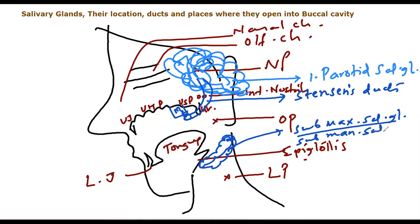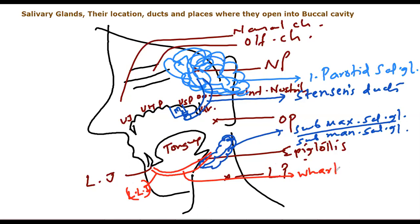At the edge of the lower jaw there is another pair of salivary glands called the submaxillary or submandibular salivary gland. Its duct opens near the lower lateral incisors, and this duct is called Wharton's duct. Under the tongue there are many salivary glands — this is the third one, called the sublingual salivary gland.